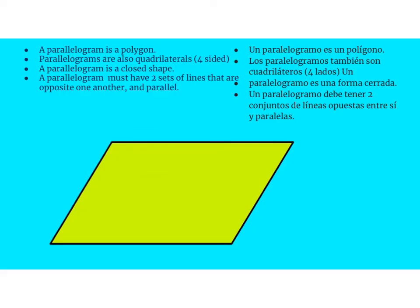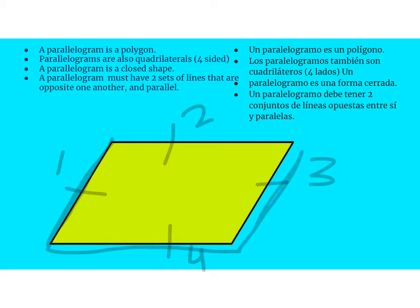A parallelogram is a polygon — it's a many-sided shape. This parallelogram has one, two, three, and four sides, so it's a polygon. It also has four sides in particular, so it's called a quadrilateral — quad means four. A parallelogram is also a closed shape, meaning all of these edges connect with one another and there are no empty spaces. And the last requirement is it must have two sets of lines that are opposite one another and parallel.